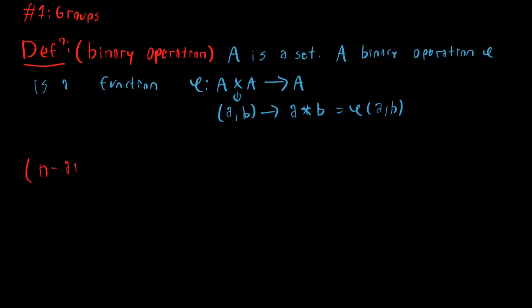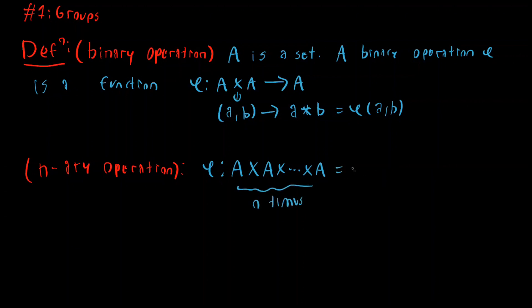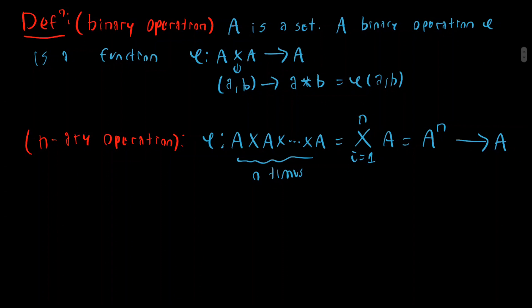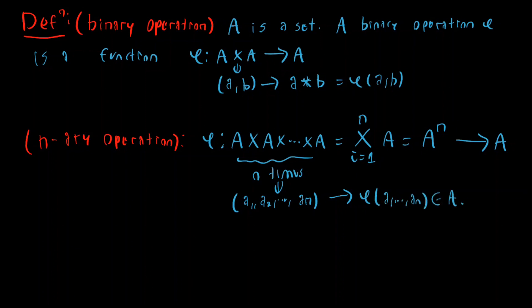We can extend this to generally n elements being mapped to another element of the same set. In this case, we call this an n-ary operation. An n-ary operation is nothing but a function φ that maps the Cartesian product of A taken n times with itself — which we can also denote in standard notation — back to A. Here we implicitly require closure inside the definition: the image of an n-tuple of elements of the set gets mapped back to an element of the original set.